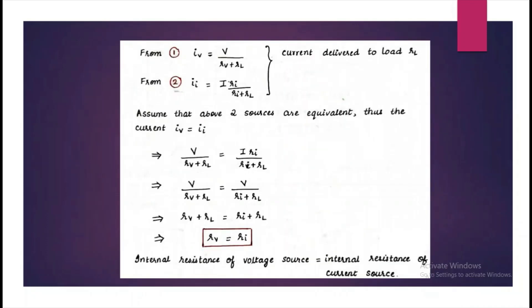When we equate the two equations, we get V over Rv plus RL equals I times Ri over Ri plus RL. The right hand side, I times Ri can be written as V.